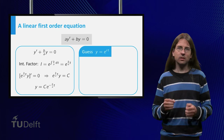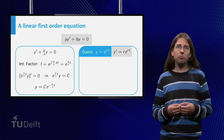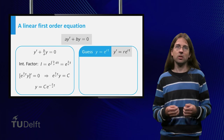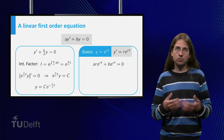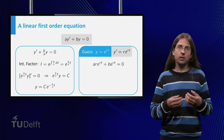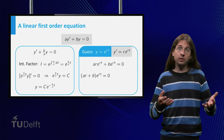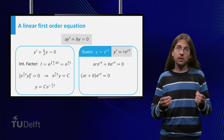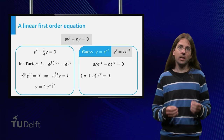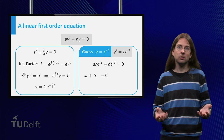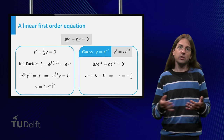Just plug this tentative solution into the equation. As y prime equals r times e to the rt, we obtain a times r e to the rt plus b e to the rt equals zero. Exponentials are non-zero, so we can divide this entire equation by e to the rt to obtain a·r plus b equals zero, which is easily solved as r equals minus b over a.